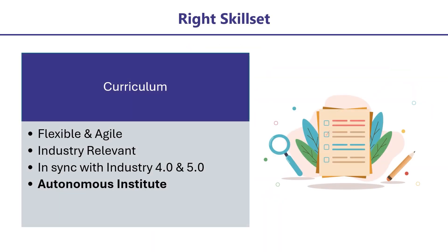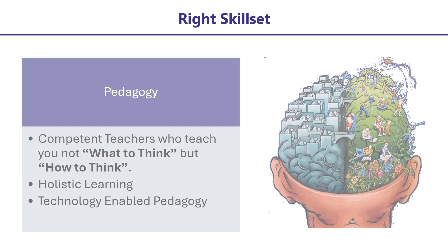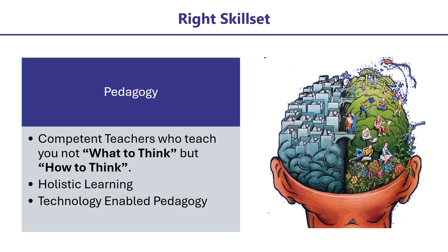Right skillset means the right curriculum and the right pedagogy. Mumbai University curriculum is good, but it is revised every four to five years, whereas technology is changing every two years. Hence, it is better to choose an autonomous college which is able to design industry-relevant agile curriculum in sync with Industry 4.0 and Industry 5.0. Right pedagogy is important to ensure that learning takes place. Ensure that the college faculty are not merely qualified, but are also gifted teachers.